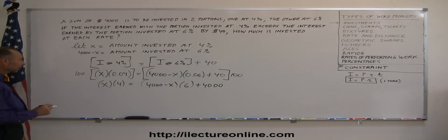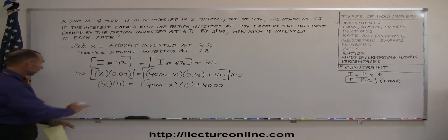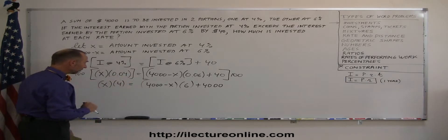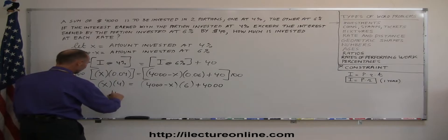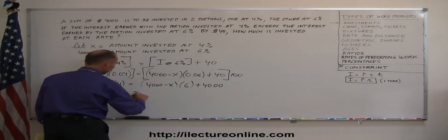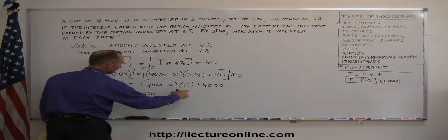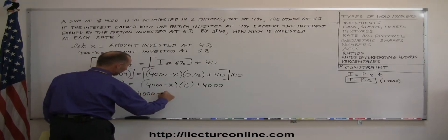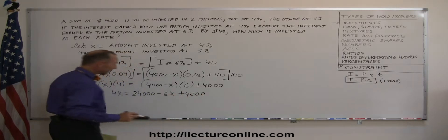All right, now we can go ahead and get rid of the parentheses, so we'll multiply everything out. So, this is 4x equals 6 times 4,000 is 24,000. 6 times x is, and it's a minus, that becomes minus 6x, and that would be plus 4,000.